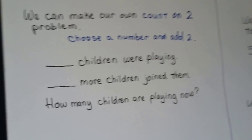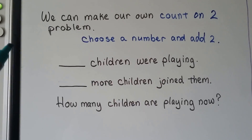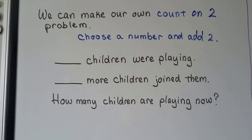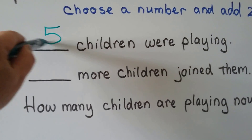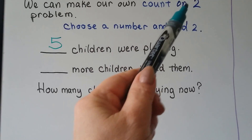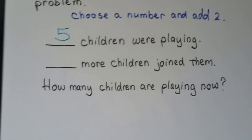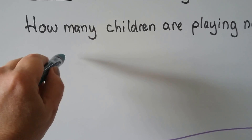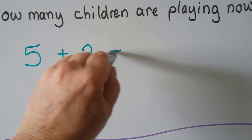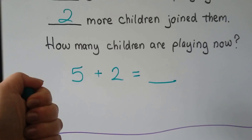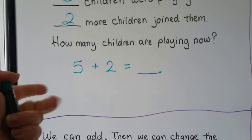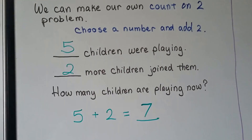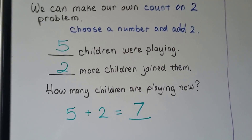We can make our own count on two problem. We just choose a number and add two. I'm going to choose five — you might choose a different number. Five children are playing, two more children join them. How many children are playing now? We write our addition equation: five plus two is equal to... we start with the five and count on the two — five, six, seven. Five plus two is equal to seven.